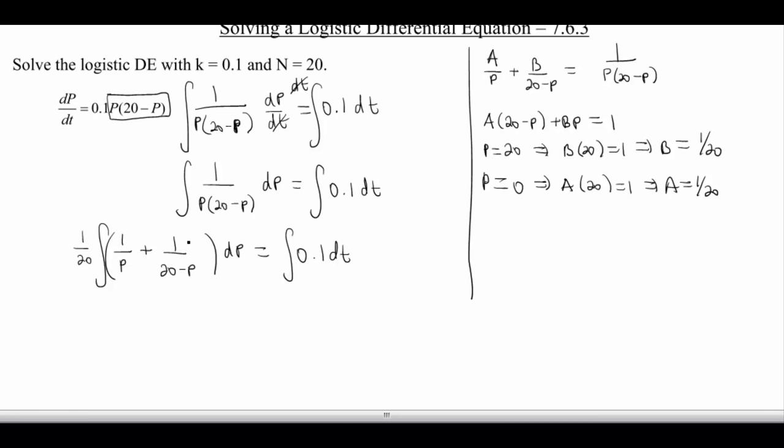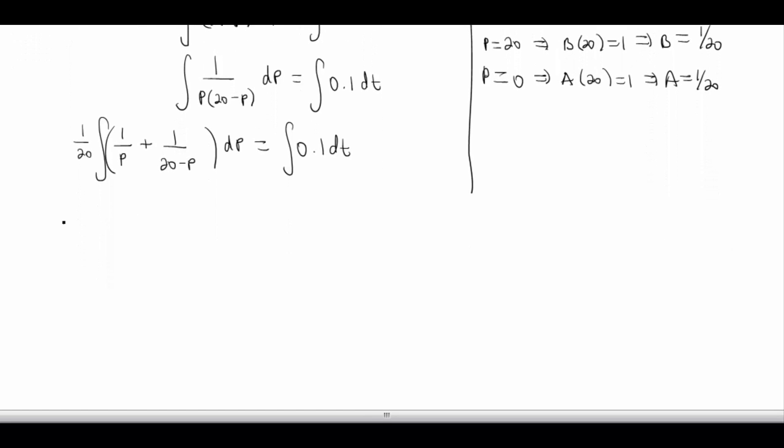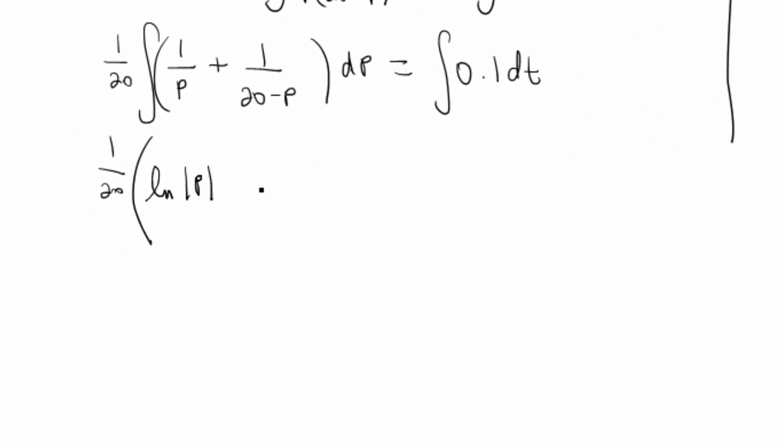What that allowed us to do is we now can do these integrals. 1 over p integrates with the natural log, and this one is another natural log. I've got my 1 over 20 out here. The integral of 1 over p is the natural log of the absolute value of p. And then that's going to be minus, because of this negative here in front, and again a u-sub idea, we're gonna have the natural log of the absolute value of 20 minus p. That's going to equal 0.1t and of course, plus c.